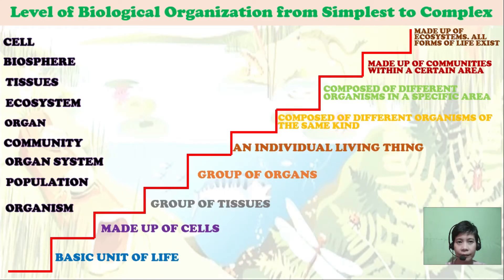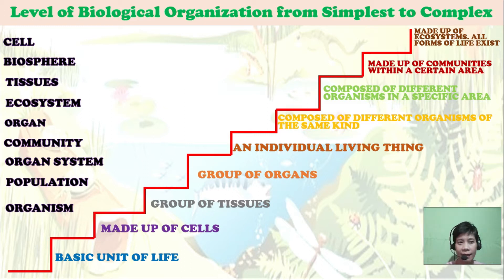So this time we will determine the level of biological organization from simplest to complex. Let's start. A cell is the basic unit of life.